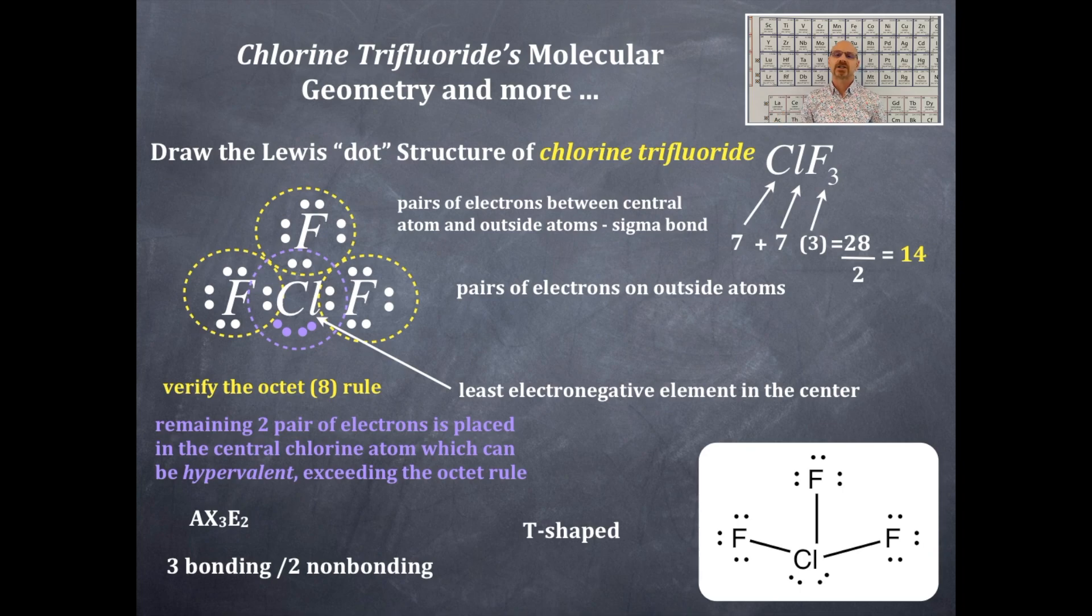Now we're going to do the hybridization of this. We're going to count the number of domains around the central element. Oh yes, I forgot about the bond angles. The bond angles, that's less than 90, and I'll show you why that is the case. There's lone pairs of electrons on the central element. Those are compressing the bond angles, which you would think would be 90 degrees, but they're not quite.